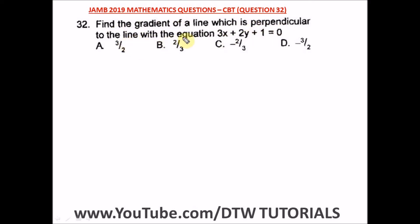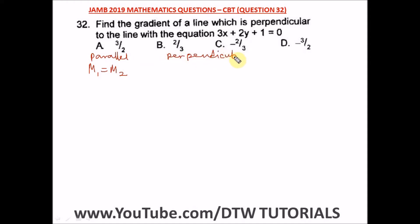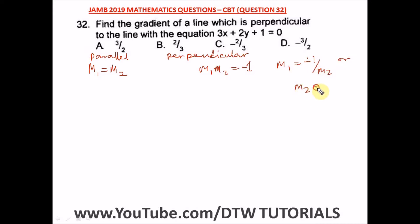Remember, when looking for gradients: if two lines are parallel, their gradients are equal — m1 is equal to m2. But if the lines are perpendicular, their gradients satisfy m1 times m2 equals negative one.